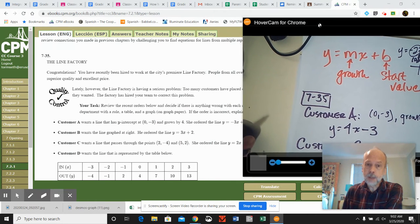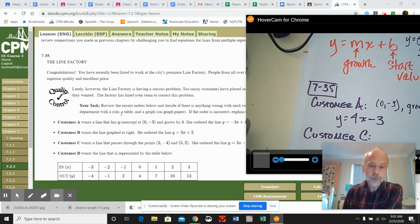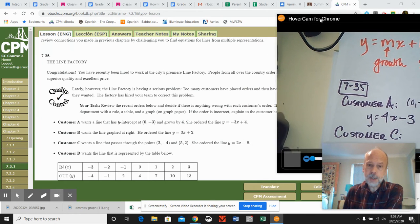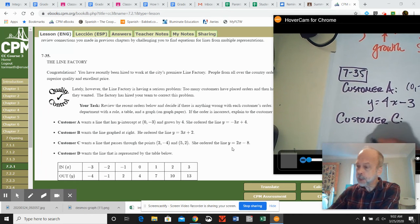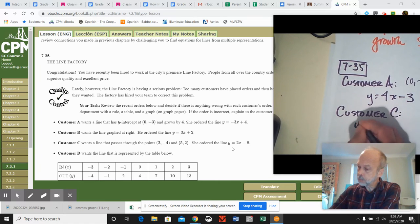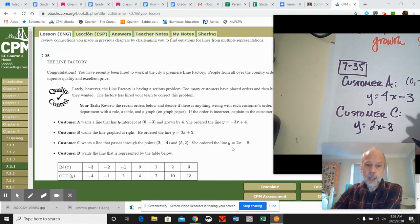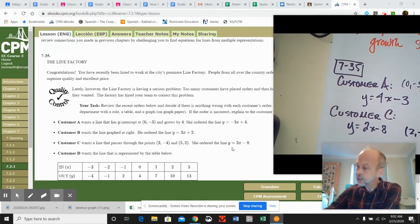Now, an example of a correct one would be customer C. Customer C has ordered the line y equals 2x minus 8. And they want something that will go through 2, negative 4, and 5, 2.